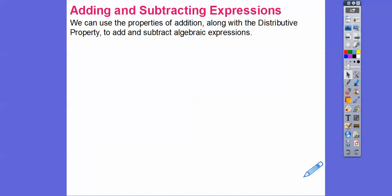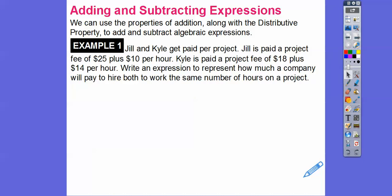We can use the properties of addition along with the distributive property to add and subtract algebraic expressions. Here's an example. We're going to add like terms. Jill and Kyle get paid per project. Jill is paid a project fee of $25 plus $10 per hour — she goes there, gets $25, and then $10 per hour after that. Kyle is paid a project fee of $18 plus $14 an hour. Writing an algebraic expression representing how much a company will pay to hire both to work the same number of hours on the project.